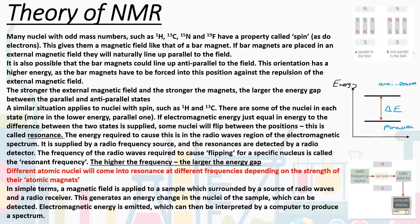A similar situation applies to nuclei that have this property called spin. You'll notice that the key thing is that many of them have odd mass numbers — so it's not necessarily the most common one on the periodic table. For example, it's carbon-13 not carbon-12, nitrogen-15 not nitrogen-14. But there are some we do naturally find, like fluorine-19 and hydrogen-1. This parallel and anti-parallel states situation applies to nuclei with spin.